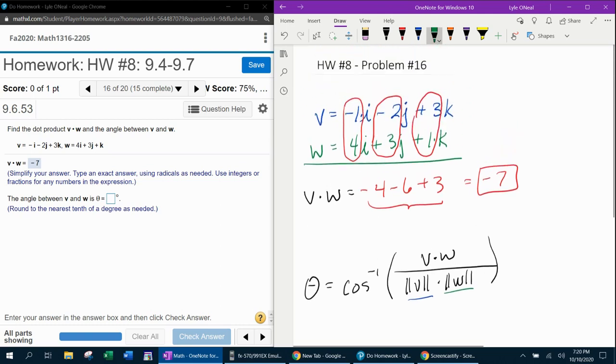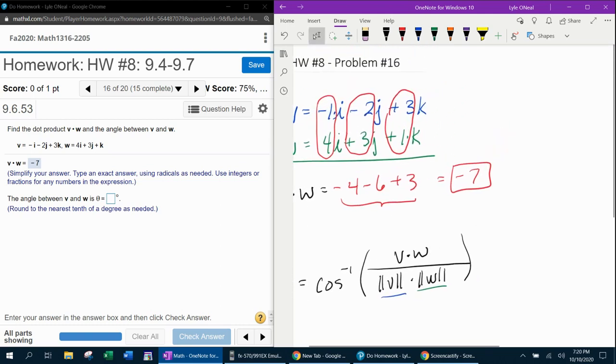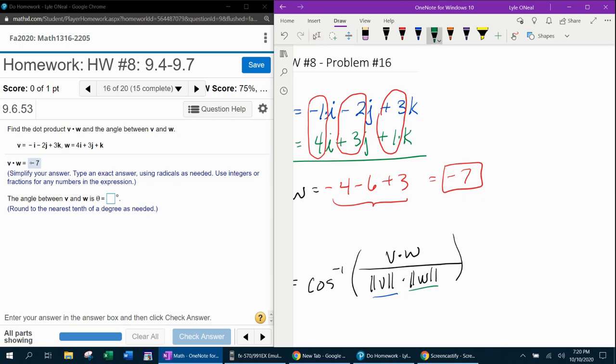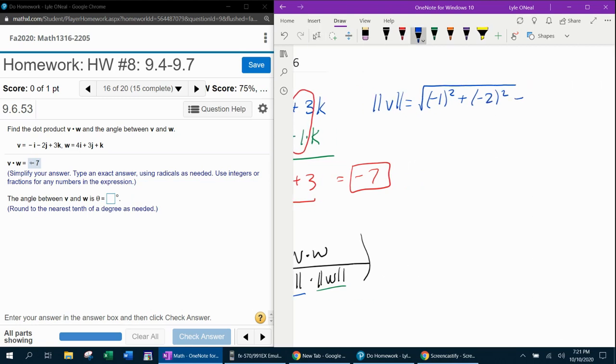So let's scroll up and over like this. And then we're going to start with the magnitude of V. Remember, the magnitude formula is the square root of A squared plus B squared plus C squared. So that will be the square root of negative 1 squared plus negative 2 squared plus 3 squared.